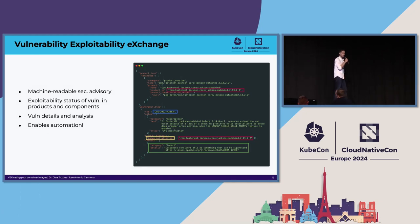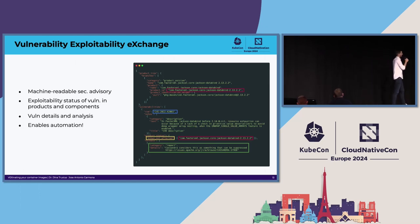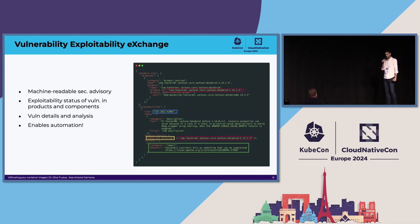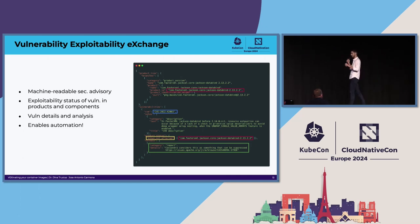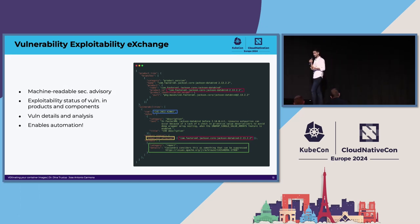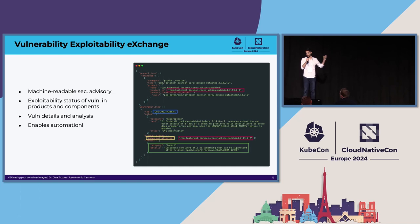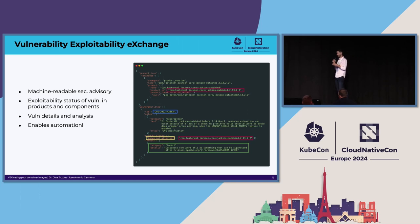Some of you may say this looks like a security advisory — and yes, VEX is kind of a security advisory. But historically, security advisories were targeted at humans, were human-oriented. This one is machine-readable. And when you have machine-readable things, you can automate things. And automation enables doing cool things. We will cover that a little bit in the demo.